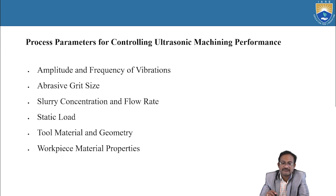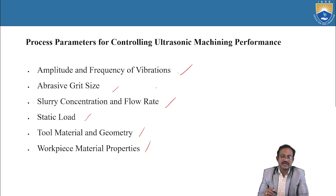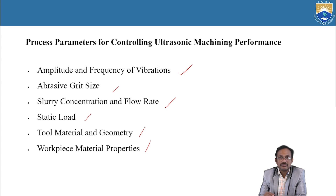Process parameters for controlling ultrasonic machining performance: amplitude and frequency of vibrations, abrasive grit size, slurry concentration and flow rate, static load, tool material and geometry, and workpiece material properties. These are the process parameters for controlling ultrasonic machining performance.